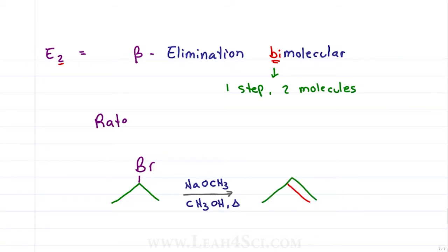Since this is a 1-step reaction that involves 2 molecules, the rate for an E2 reaction is equal to some constant K times our 2 molecules: the substrate or the carbon chain holding the leaving group and the base, the molecule that attacks.